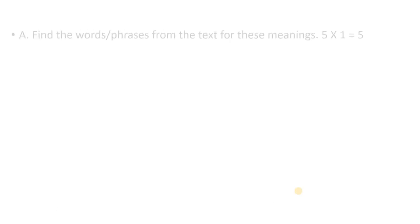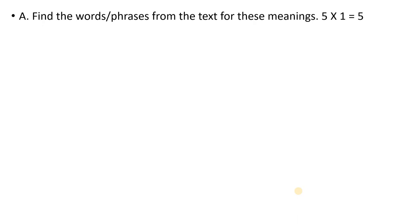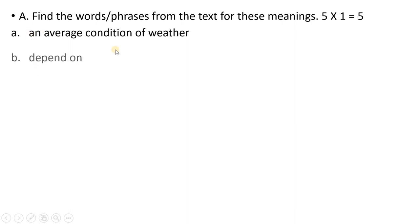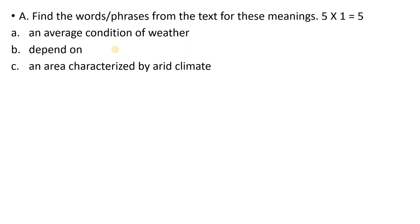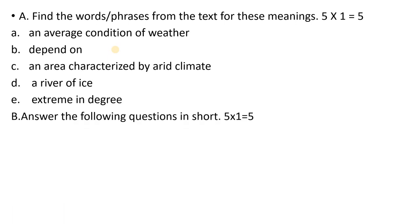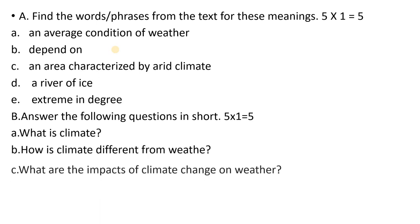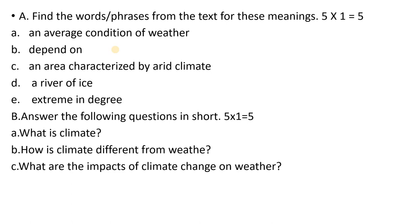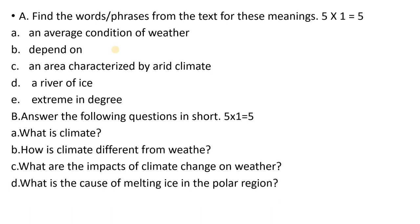What type of questions are asked here? Find the words or phrases from the text for these meanings: average condition of weather; depends on; area characterized by its arid climate; river of ice; extreme in degree. Try to solve these activities. Answer the following questions in short — also carries 5 marks: What is climate? How is climate different from weather? What are the impacts of climate change on weather? What is the cause of melting ice in the polar region? What is the suitable title of the above text?